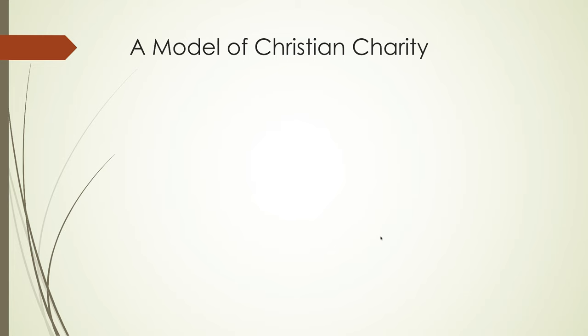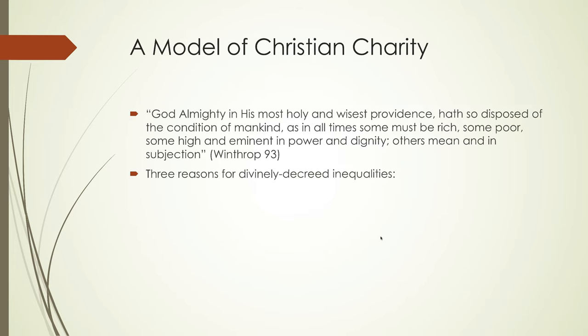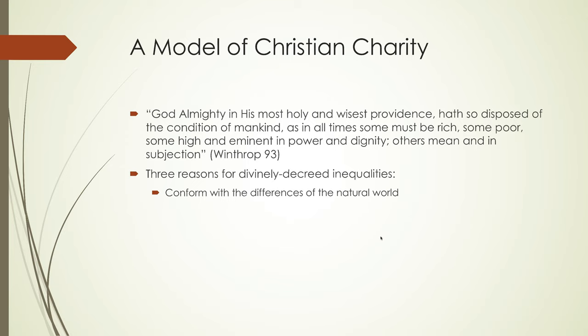Winthrop begins his sermon by stating that God Almighty, in his most holy and wisest providence, has so disposed of the condition of mankind as in all times some must be rich, some poor, some high and eminent in power and dignity, others mean and in subjection. Winthrop then states that there are three reasons why God has decreed inequalities among mankind. The first is to conform with the differences throughout the natural world, discussing how God wishes to give his gifts to mankind by distributing them through mankind — quote, "dispensing his gifts to man by man."